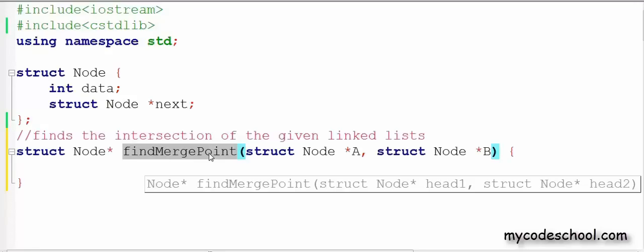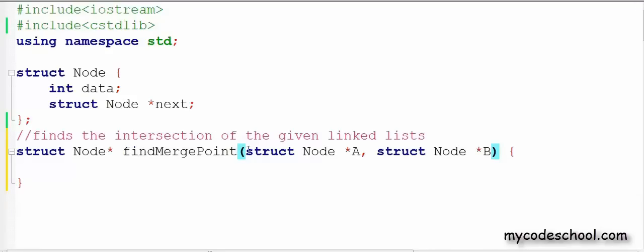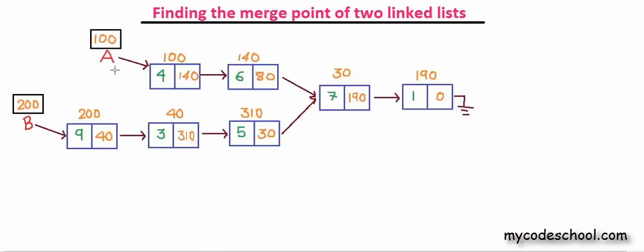The function findMergePoint finds the intersection of the given linked lists. We will be given the head nodes of both the lists in parameters as A and B and we will be returning the intersecting node of the given list. So A is the pointer to the head node of list 1 and it has address 100 while B is the pointer to the head node of list 2 with address 200. I'll be denoting the length of list A with M which is 4 here while the length of list B with N which is 5 here.